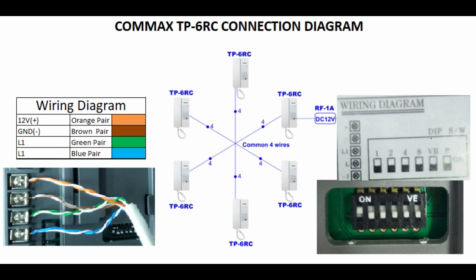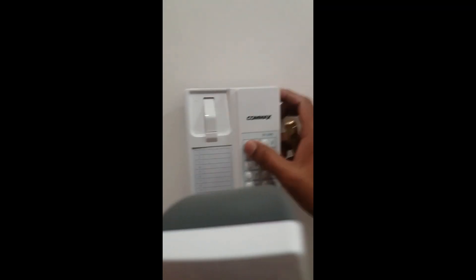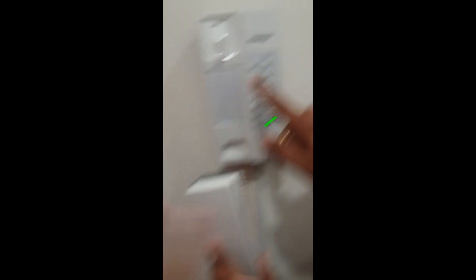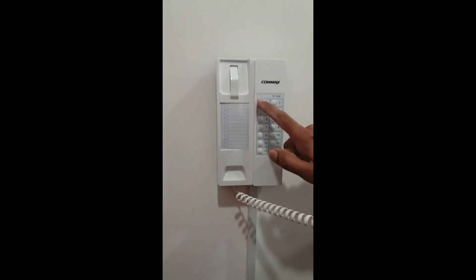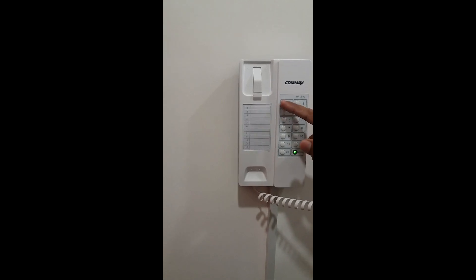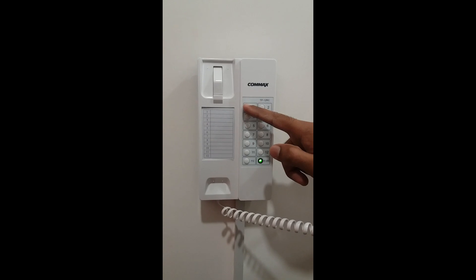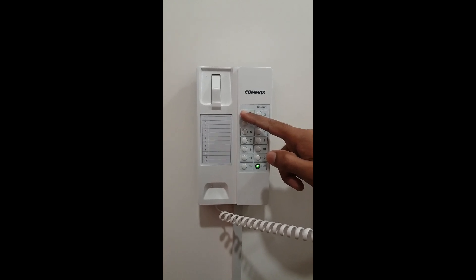If you need to make call from the first station, number one, to fifth station, you need to go to the first station, take the receiver and press number five and hold on. You can hear the ring sound.